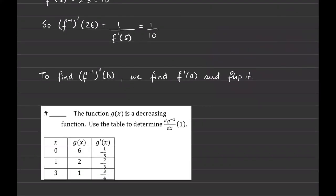Ultimately, to find the derivative of the inverse at b, we simply find f'(a) — because a was the input for f — and flip it to get the answer. This is going to be much, much shorter to do.